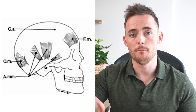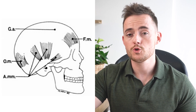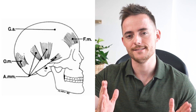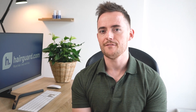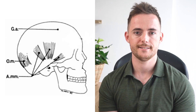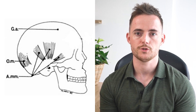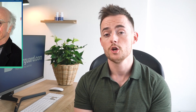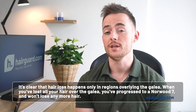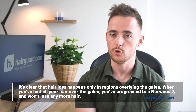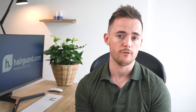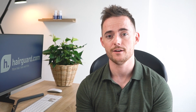You can see the various muscles that border the galea in this illustration — the large white space on the top is the galea. When I look at this, one thing comes to mind: Norwood 7. If you blot out the frontal muscle, which doesn't have hair over it to begin with, you're left with what looks like a Norwood 7 — imagine the stripy areas are hair instead of muscles. A Norwood 7 is somebody who has advanced to the last stage of androgenetic alopecia. So hair loss happens only in regions overlying the galea. When you've lost all your hair over the galea, you've progressed to a Norwood 7. The hair located over the occipital muscle region won't fall off, and neither will the hair on either side of the galea, which is also over muscle.